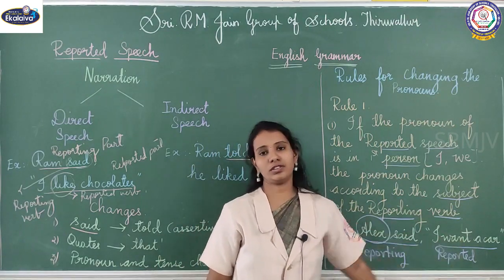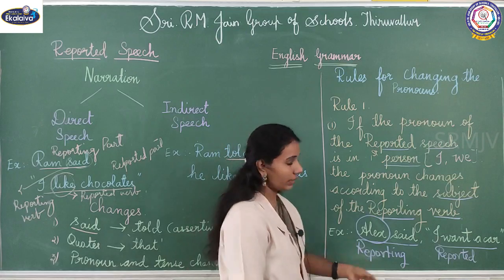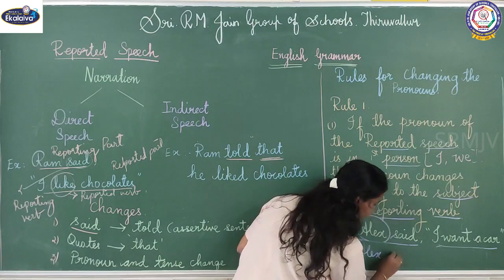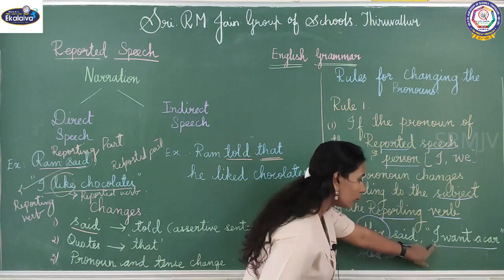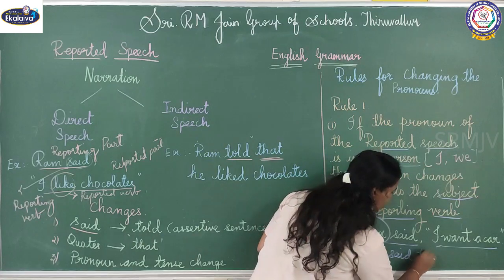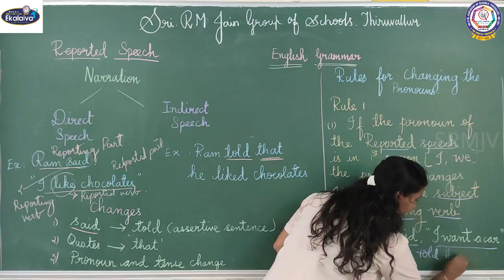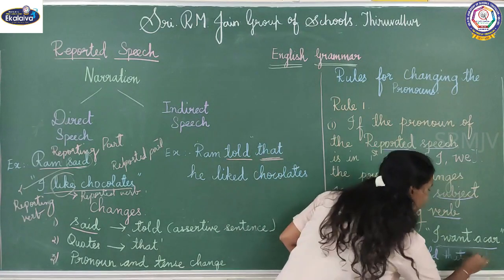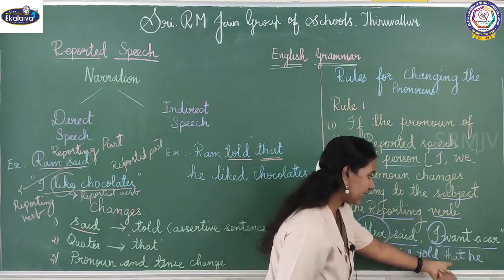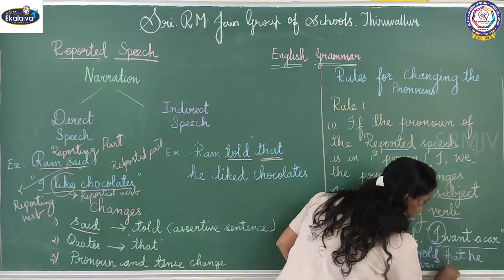The corresponding pronoun to be used: Alex is a male, so the male pronoun is 'he'. Instead of 'said', we put 'told'. Remove the double quotes and write 'that'. Alex is the subject, so we replace 'I' with the pronoun of the subject Alex. Alex told that he wanted a car.